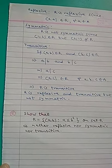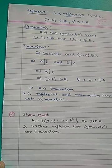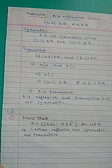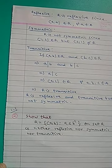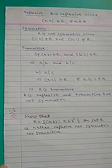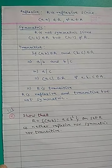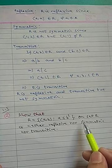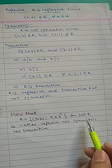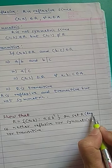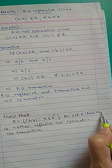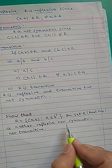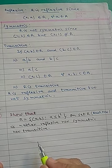Next question: Exercise 1.1, second question. Show that R equals the set of all (a, b) such that a is less than or equal to b squared, defined on ℝ (set of real numbers), is neither reflexive nor symmetric nor transitive.